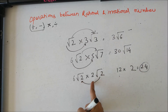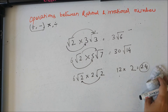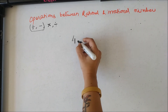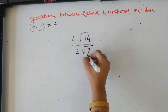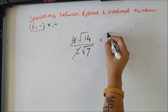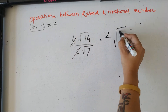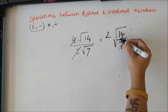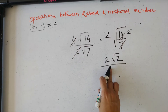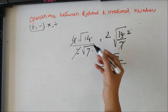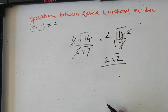For multiplication or division, the terms need not be like. For division, for example, 4 root 14 divided by 2 root 7: divide the coefficients — 4 divided by 2 is 2 — and divide inside the roots — root 14 divided by root 7 is root 2 — so the answer is 2 root 2. So for division also, the terms do not need to be like.